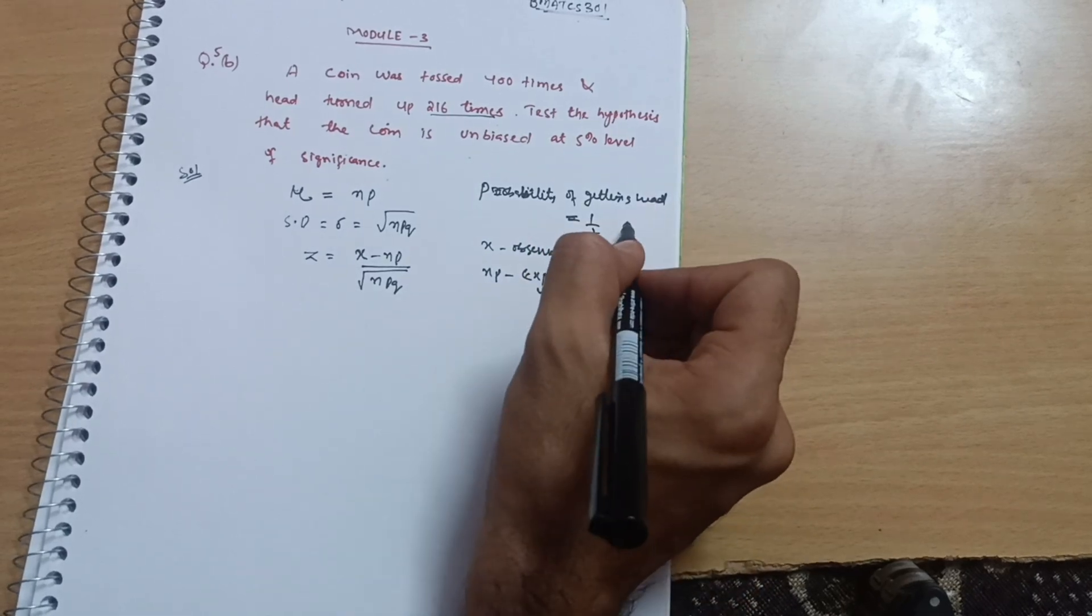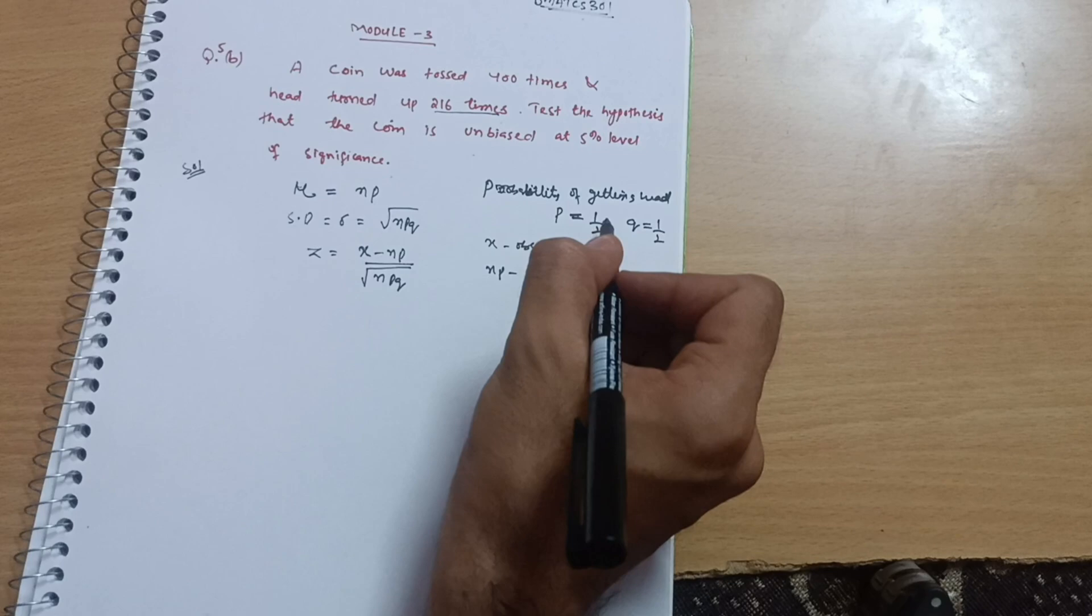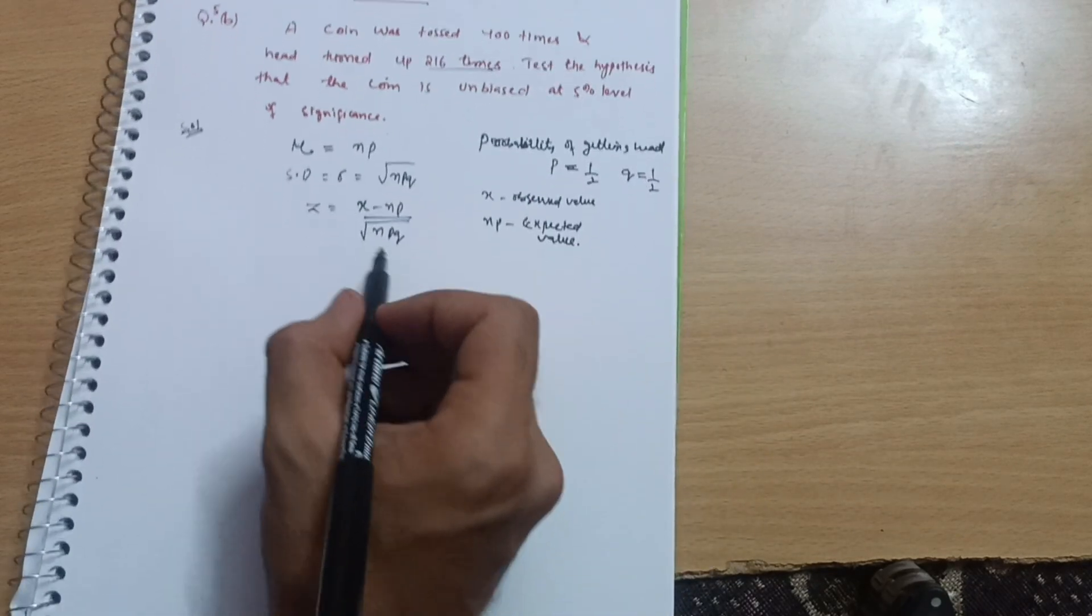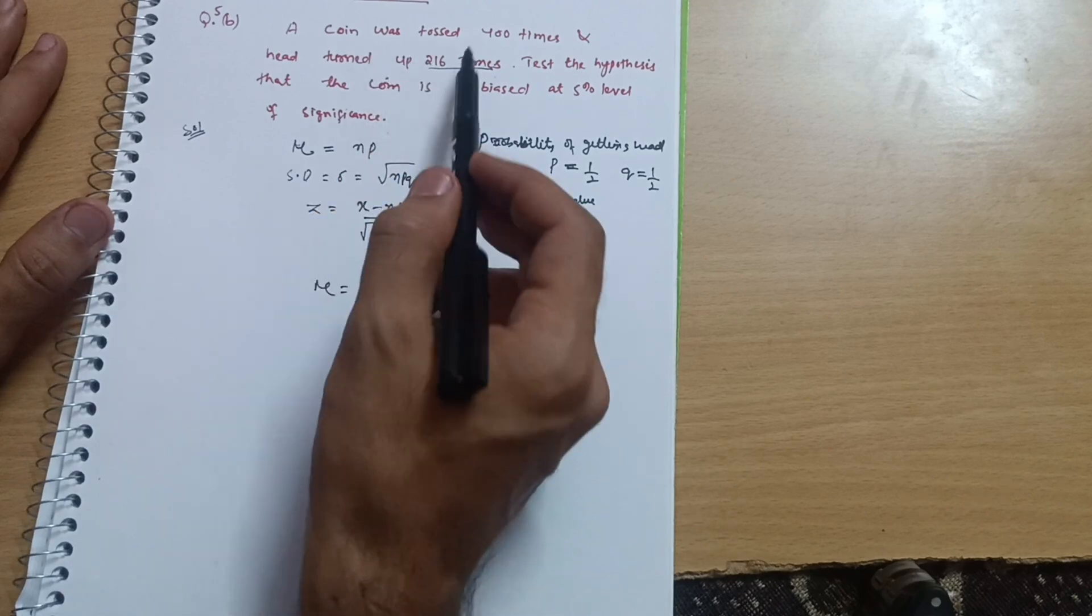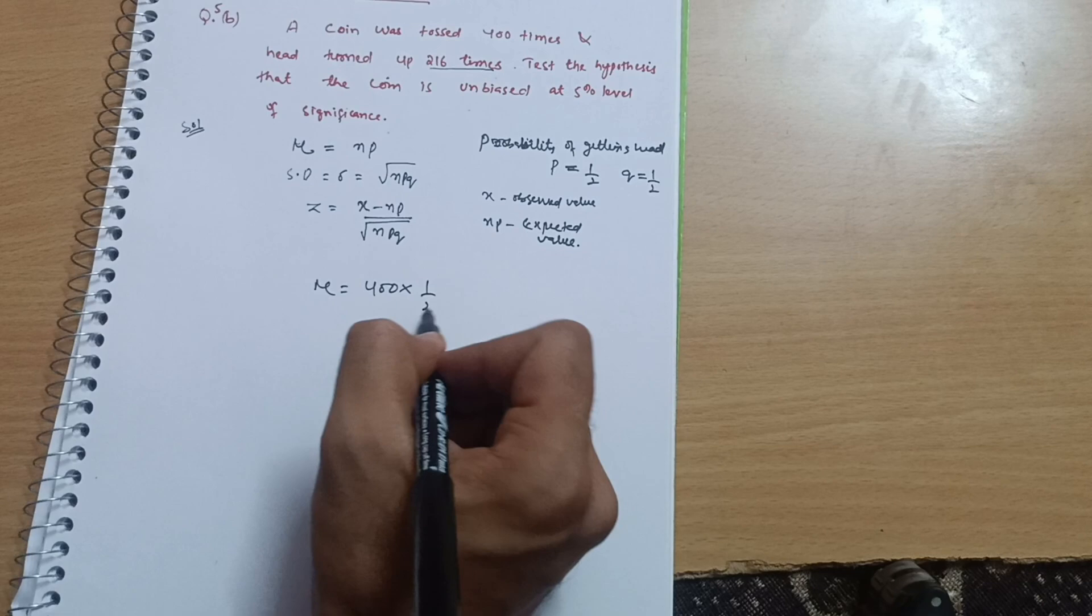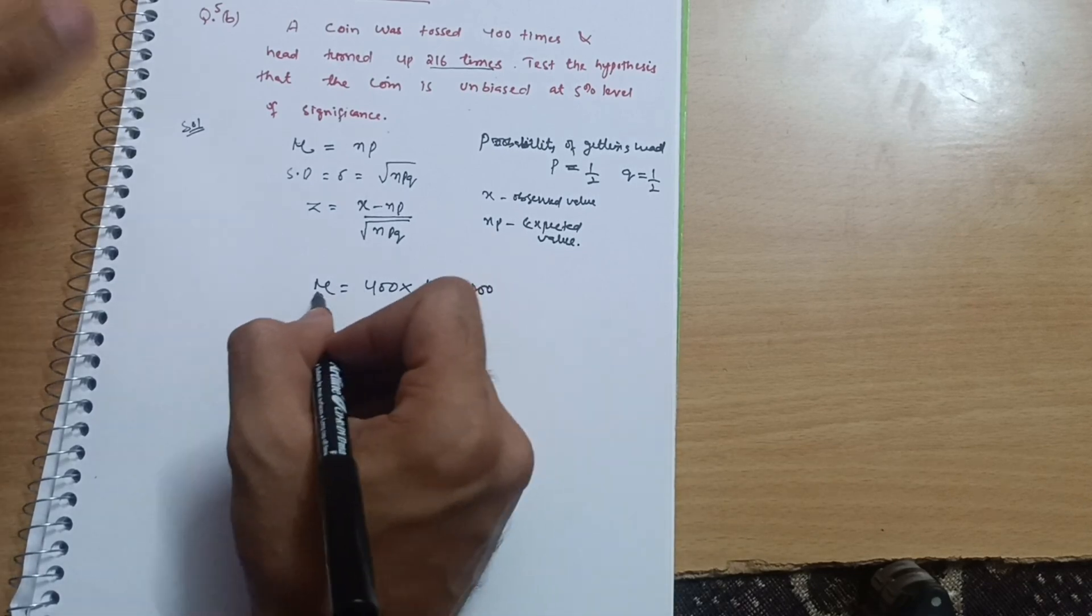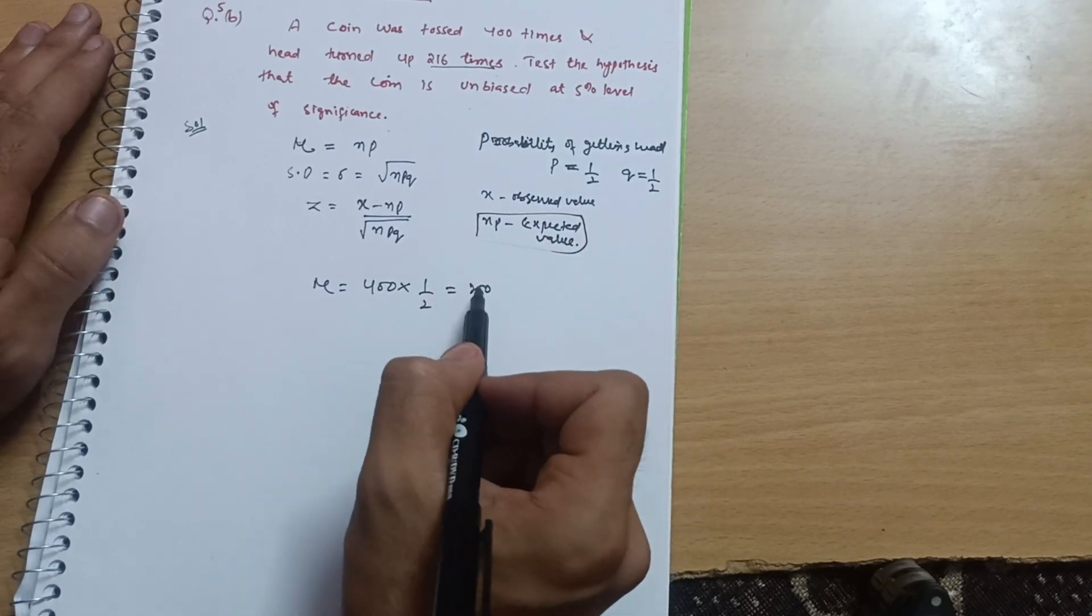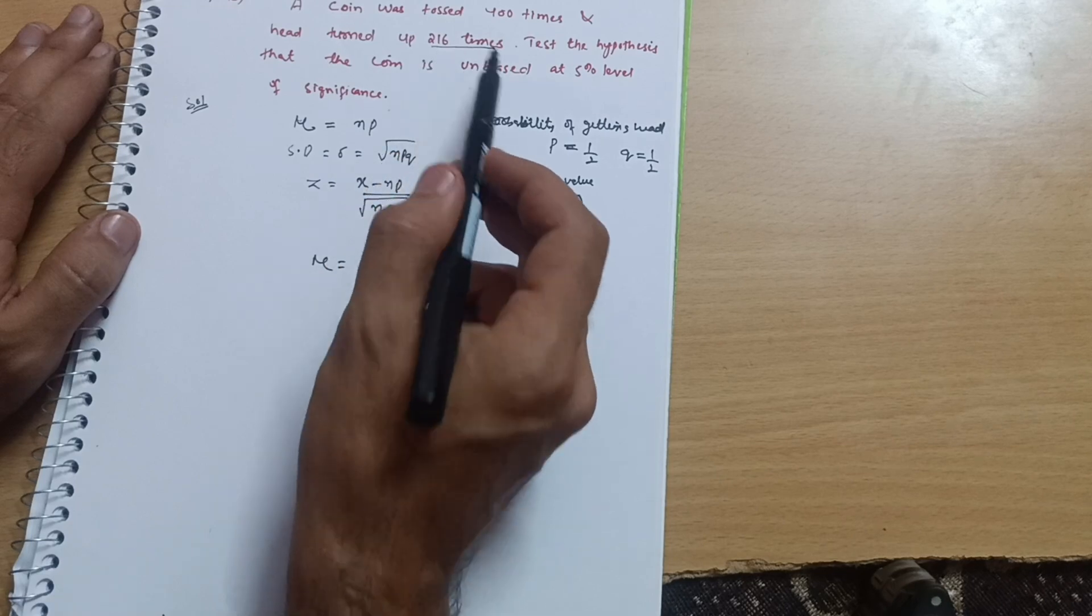Half chances are for tail. So tail is represented by Q equals 1 by 2 also. Probability P equals 1 by 2, Q equals 1 by 2. Now I can write mu equals NP. n means how many times the coin is tossed, that is 400 times, multiplied by probability 1 by 2, which is equal to 200. Mu is also equal to NP, which means the expected value, so the expected value is 200 but the observed value is 216.